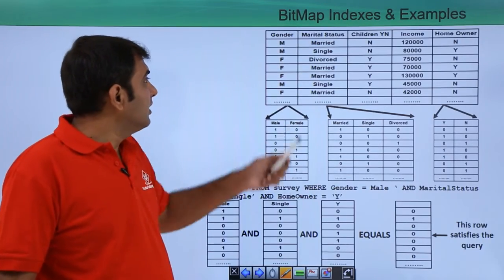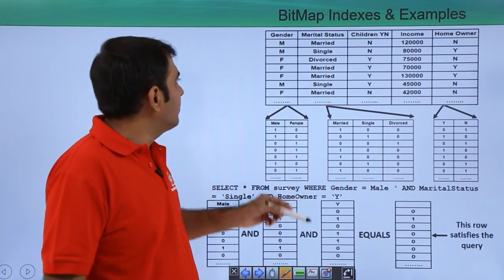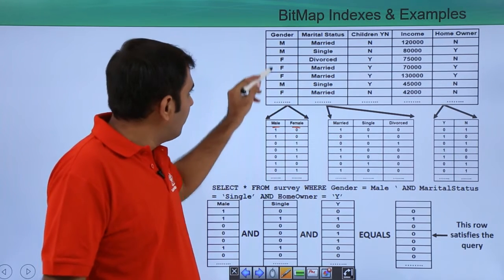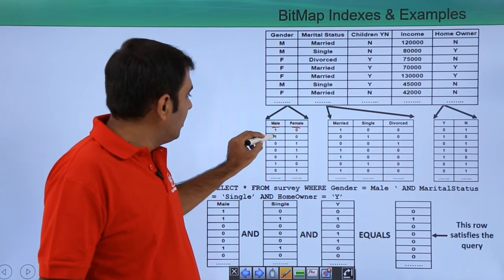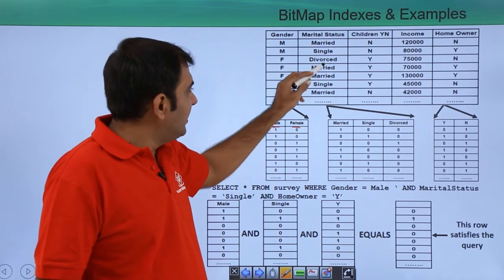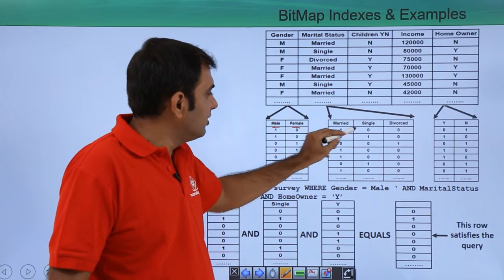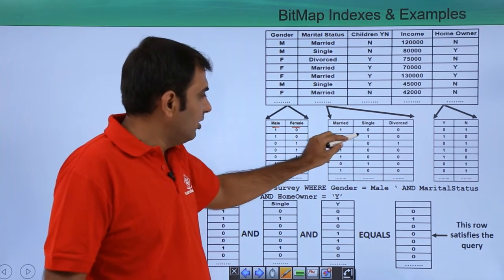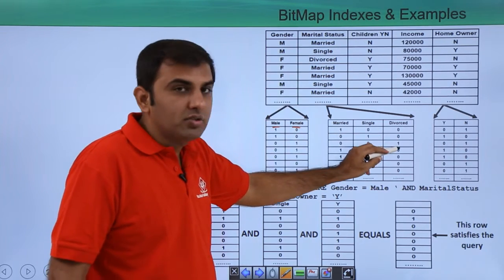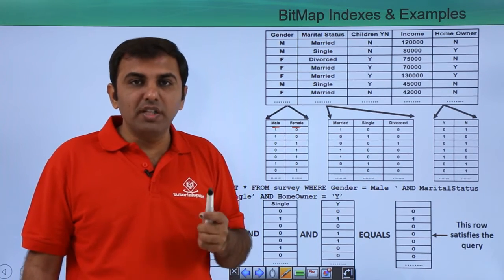In the table, we have gender, marital status, children, income, and home owner columns. For the gender bitmap, male gets 1 and female gets 0 for the male bitmap, and the reverse for the female bitmap. For marital status, married gets 1, 0, 0; single gets 0, 1, 0; and divorced gets 0, 0, 1. Whatever value a row contains, it is allocated 1; whatever value it does not contain, it is given 0. For home owner, N is 0 and Y is 1. This is how Oracle internally works with bitmap indexes.